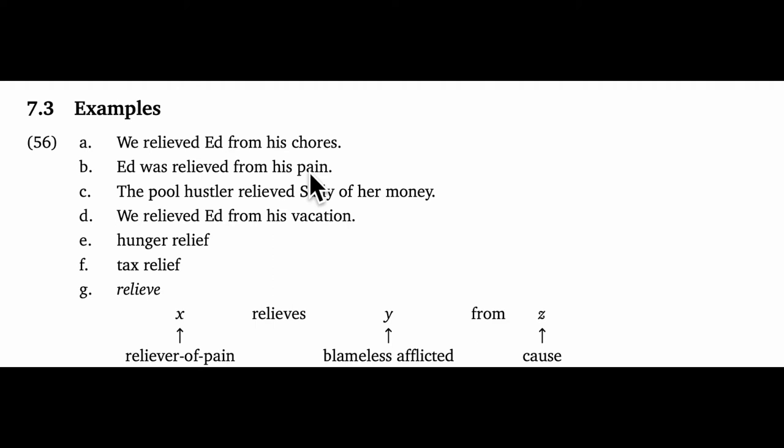When we move to example 56c, we can see why these examples might be ironic or odd now, right? The pool hustler relieved Sally of her money. To make sense of this, we have to assume that the pool hustler is the reliever of pain, Sally is the afflicted, and the money was the cause of her affliction. And since all that seems unlikely to be true, the example might sound sarcastic, for example.